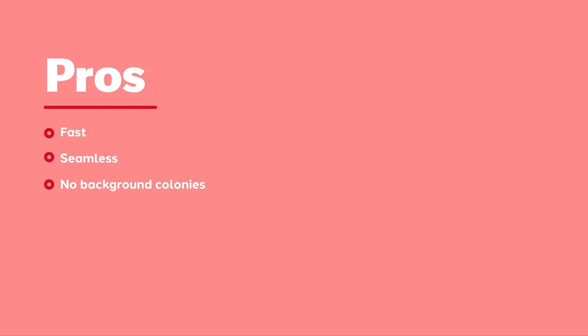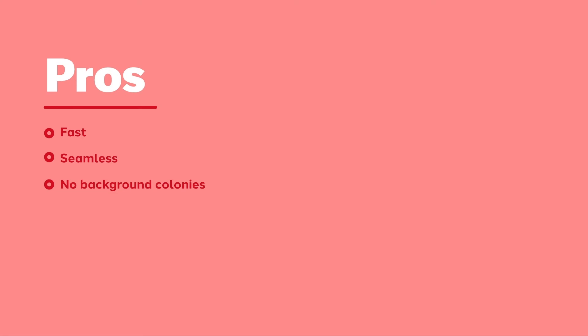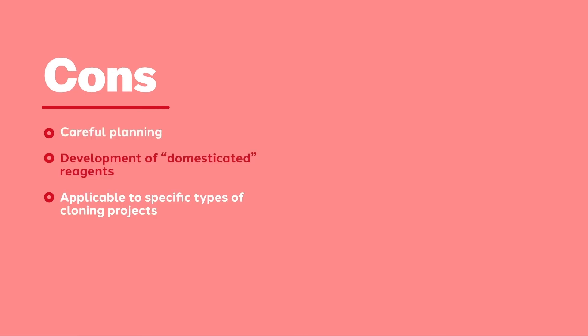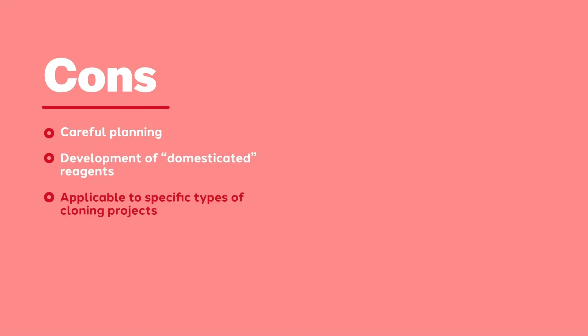Golden Gate cloning is fast. In addition, it is a seamless cloning technique, and when everything is working properly, you will have no need to screen through background colonies. On the other hand, you need to plan carefully. As the fragments you plan to clone become progressively longer, the odds of an extraneous restriction site interrupting your desired clone increase. A great deal of design and prep time is required to establish a new Golden Gate cloning system in your lab.